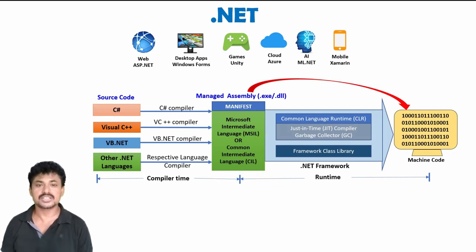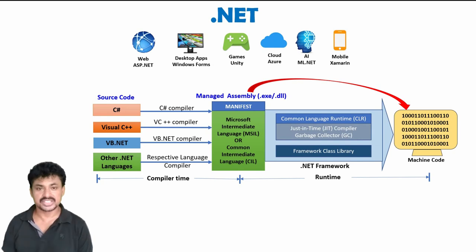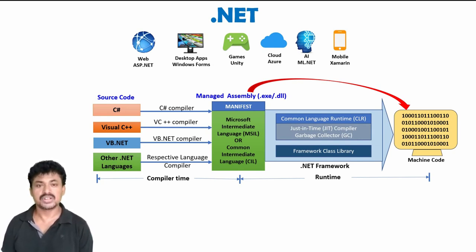The .NET Framework contains the Common Language Runtime (CLR), a JIT compiler, a garbage collector, and Framework Class Libraries. The Framework Class Libraries contain thousands of classes used internally by .NET programs, and developers can also use these classes at development time.